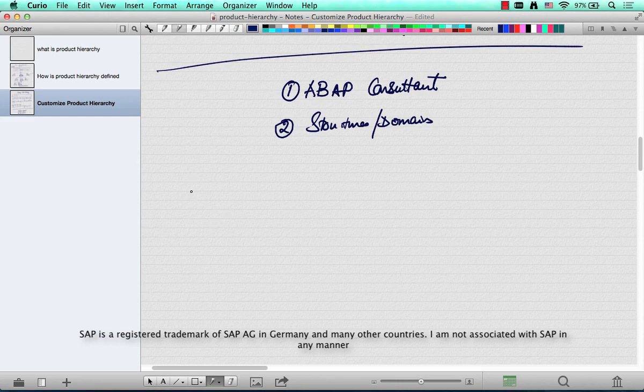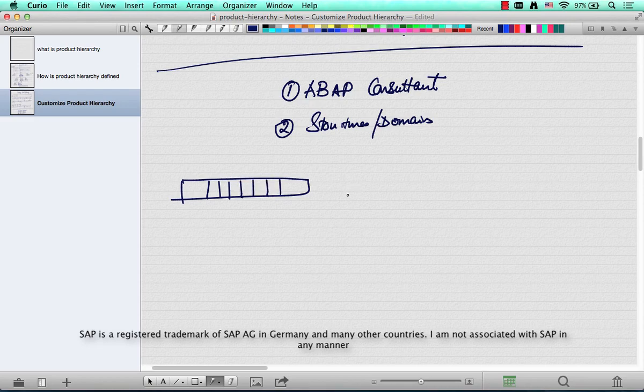So here is what you need to know about product hierarchy technically. So these 18 characters that I was talking about, right? They are defined in a domain called PRODHS. P-R-O-D-H-S, that's the name of the technical element or the domain that defines this product hierarchy. You can go to SE11, enter PRODHS, and then you can see the definition of it.